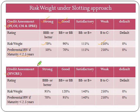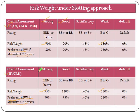For HVCRE, risk weights assigned range from 95% to 250% depending upon the rating. Here also, supervisors can allow banks to apply a preferential risk weight for those exposures where maturity is less than 2.5 years, and again this preferential risk weight is available only for strong and good assessments.